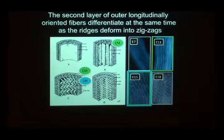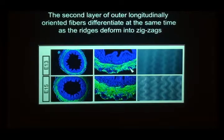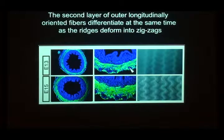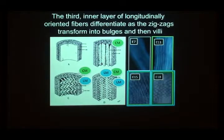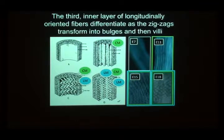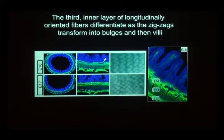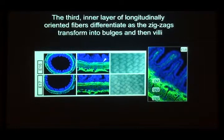Exactly when you go from ridges to zigzags — when you enter this transition — the second layer of smooth muscle forms on the outside of the first layer, and that outside layer is running in and out of the plane of the board. Then, exactly when you go from zigzags to villi is when the next muscle layer forms on the inside, also going in and out of the plane of the board. So this coincidence in timing is very telling.